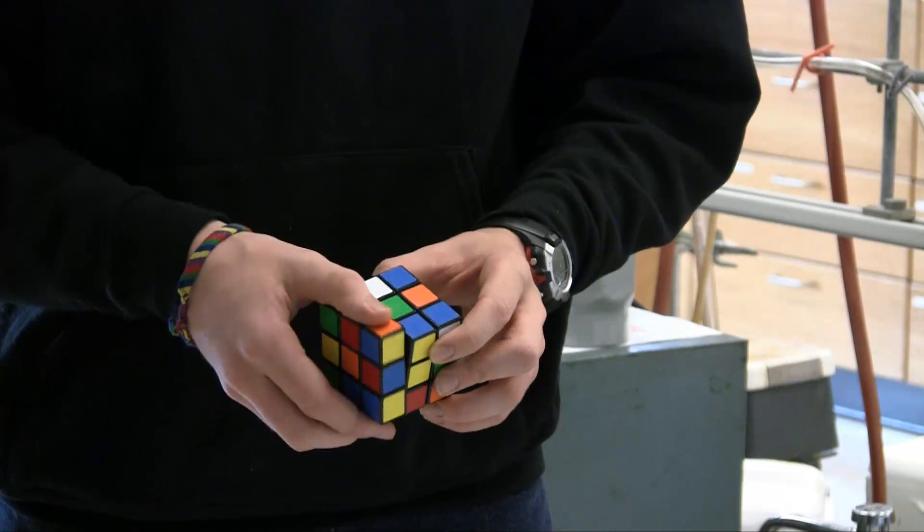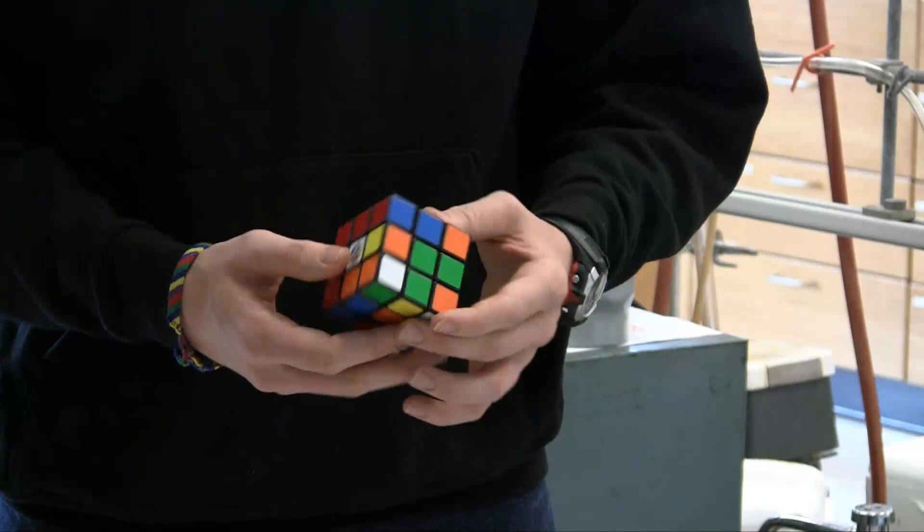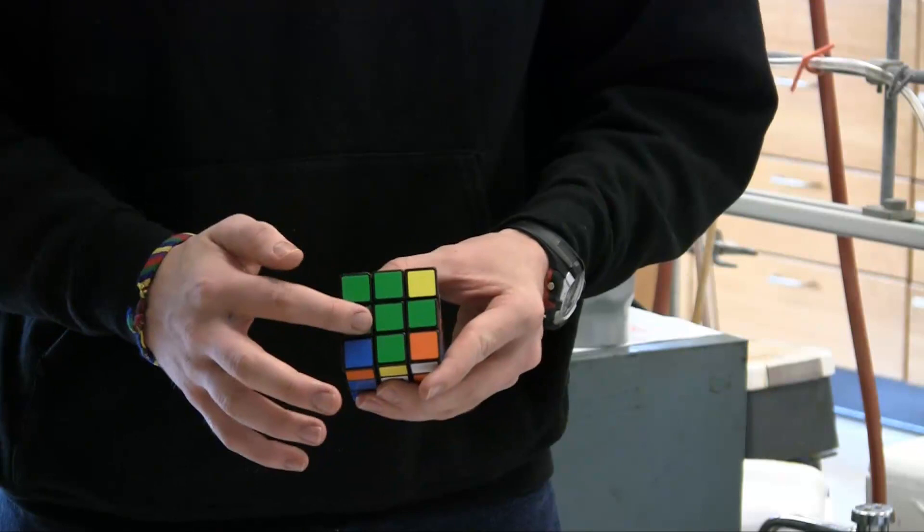When you're starting off with a mixed up Rubik's cube, you need to form a cross on whatever side you choose to be the top side. I chose green in this case. So now you have a cross right here.